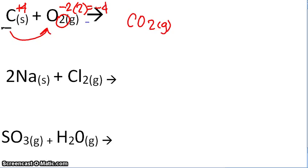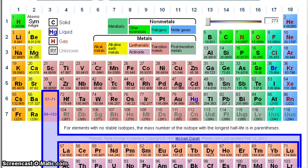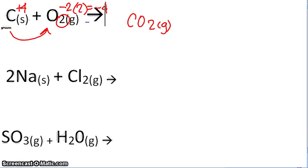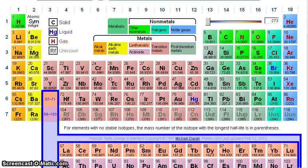So second reaction I have two sodiums plus chlorine gas. And what I'm going to do is go to the periodic table and show you where sodium is. And over here you can see that it's in the first column. And the first column means that it has a plus 1 charge. And you look at the chlorine gas and it looks like it's in the seventh column which means it has a minus 1 charge.